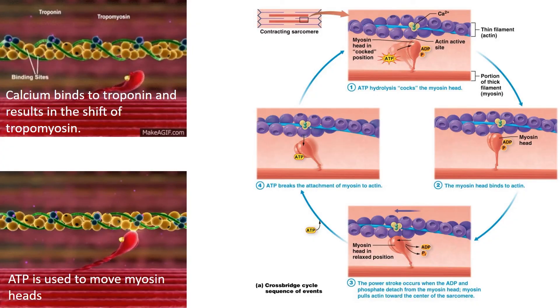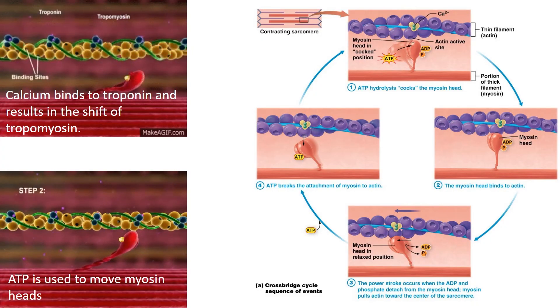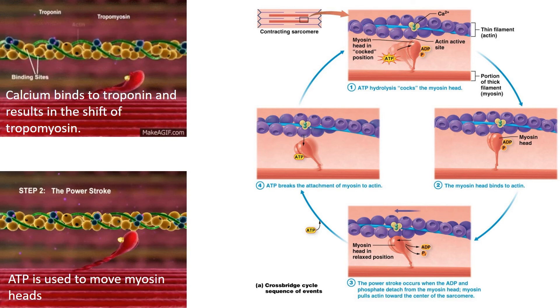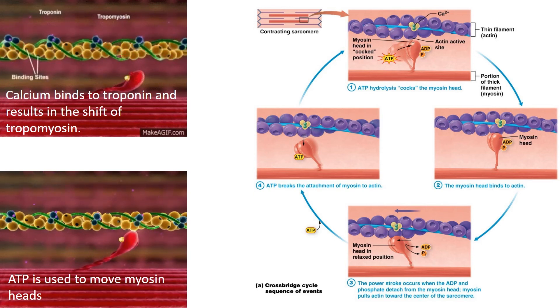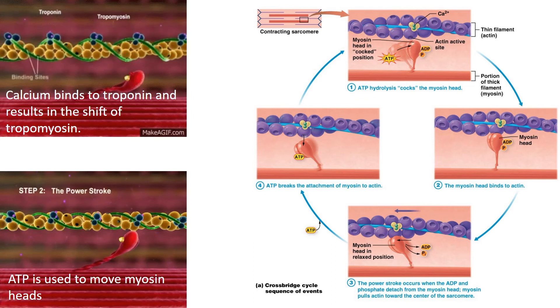A set of actin and myosin filaments is referred to as a sarcomere and is the unit of contraction for muscle. When activated, myosin heads pull actin filaments together and shorten the muscle, leading to contraction. When deactivated, the fibers stretch back out to elongated positions. All of these fibers are what make your muscle look striated. The connection between actin and myosin is referred to as a cross bridge.